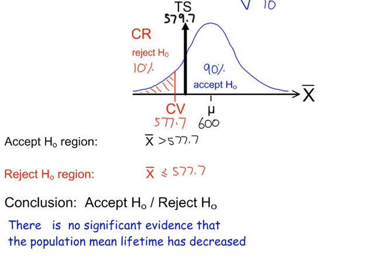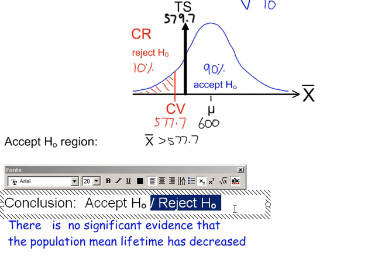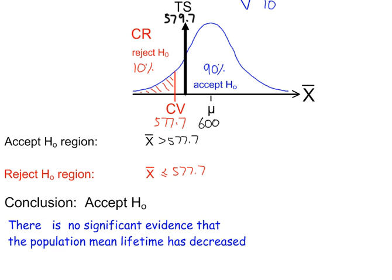Here is the conclusion, and the conclusion in context. Defining the acceptance and rejection regions may be useful for working out the probability of type 2 and type 1 errors. And because we've accepted H0, it's possible that a type 2 error was made.